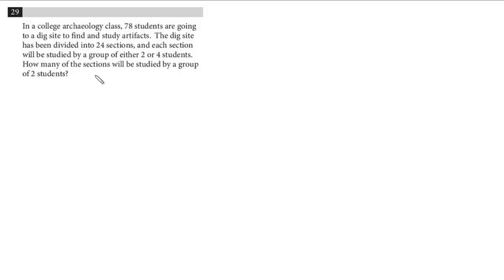In this lesson, we'll review a Heart of Algebra gridding question. This is number 29. Toward the end of the section, we know it's a difficult problem. In a college archaeology class, 78 students are going to a dig site to find and study artifacts. The dig site has been divided into 24 sections, and each section will be studied by a group of either two or four students. How many sections will be studied by a group of two students?